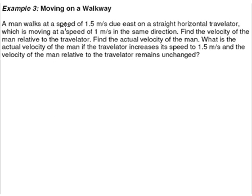Moving walkway type of questions. A man walks at a speed of 1.5 meters per second due east on a straight horizontal travelator. Travelators are something like a flat escalator that you see in some airports or even in some train stations — they are also called moving walkways.